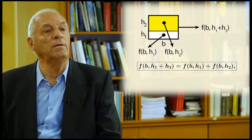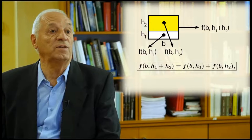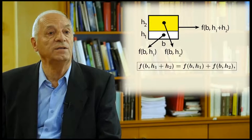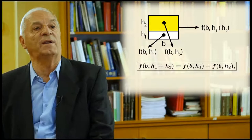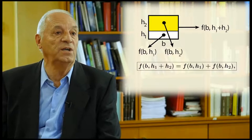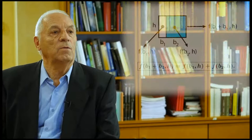The first condition is the following. Assume we divide the rectangle horizontally into two small rectangles, one in yellow and one in white. Then I express that the area of the initial rectangle is equal to the sum of the areas of the other two rectangles. The area of the first rectangle is f of b, h1 plus h2, because b is the basis and h1 plus h2 is the height. The other rectangles have areas f of b, h1 for the white one, and f of b, h2 for the yellow one. Then I write an equation that the area of the first rectangle is the sum of the areas of the other two rectangles.